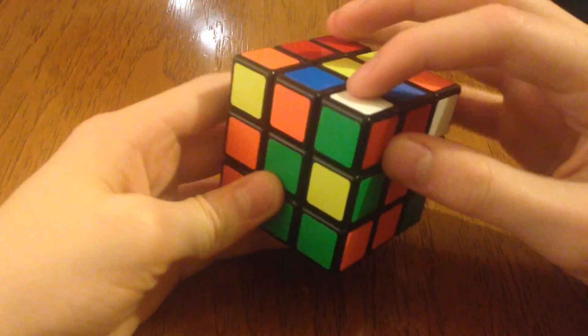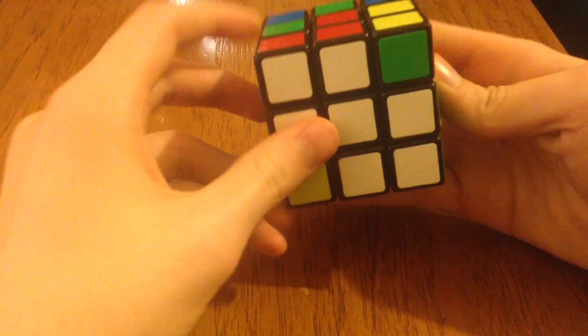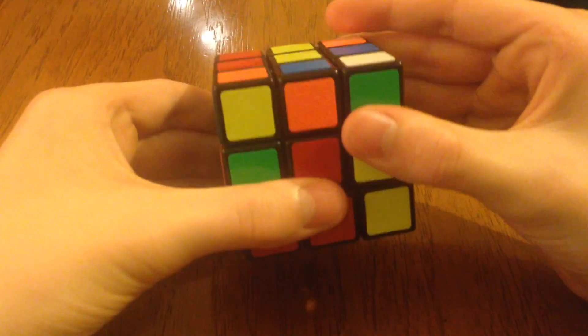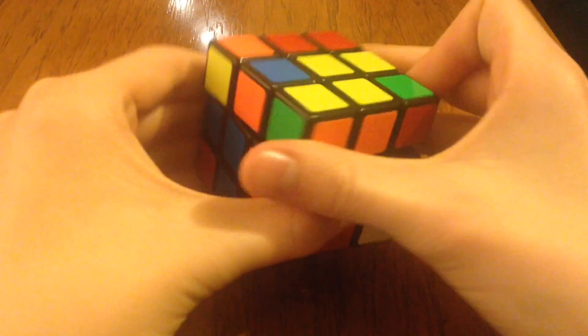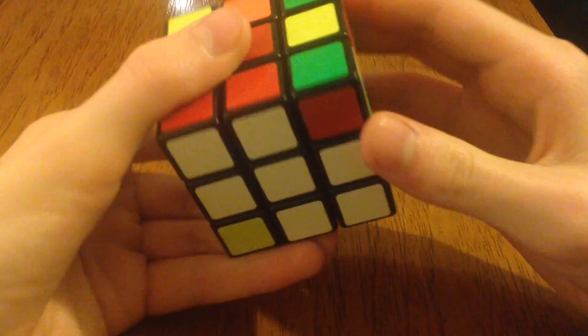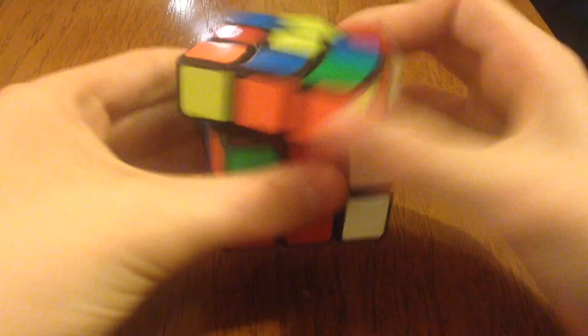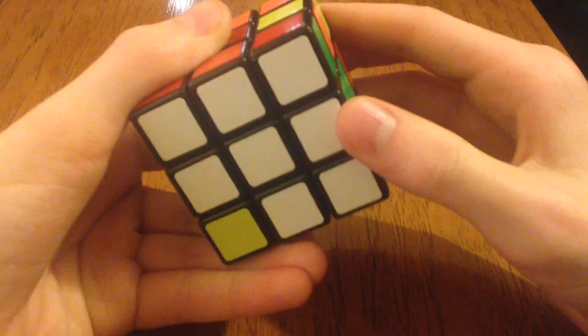So we're going to do this one. Green and red. Where's that? Green and red. So we're going to move it above. We're going to hold it like this. R, U, R prime, U prime. Let's do it again. R, U, R prime, U prime. Let's do it again. R, U, R prime, U prime. There you go.